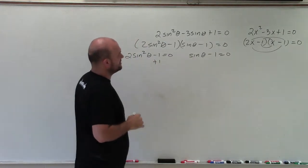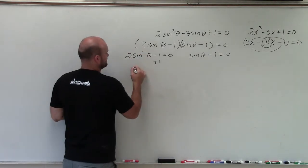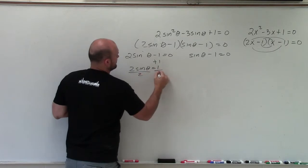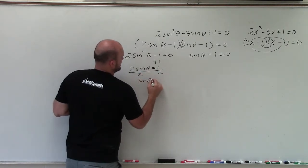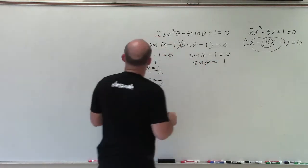That's not right. That's not sine squared, that's just sine. Sorry. So I add 1, divide by 2, divide by 2. Sine of theta equals 1 half. Over here, I have sine of theta equals 1.